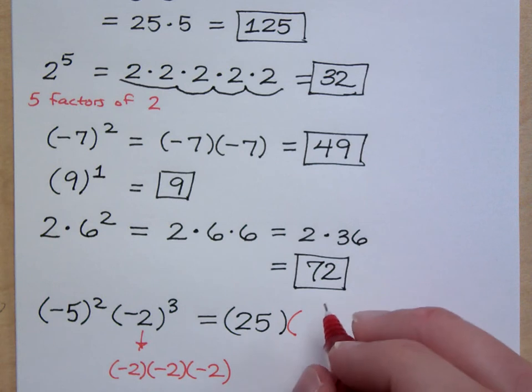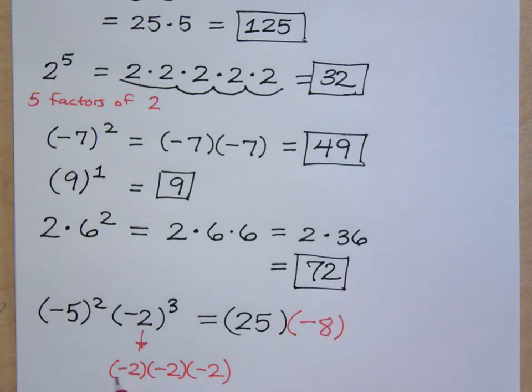I heard 8, but I think we mean negative 8, right? Because what's a negative times a negative? Positive. So this positive here times negative gives me negative. So let's finish this. What's 25 times negative 8?